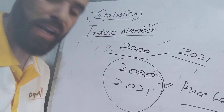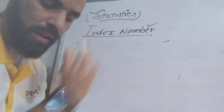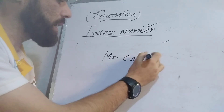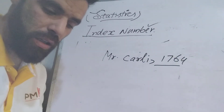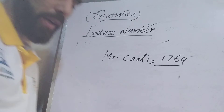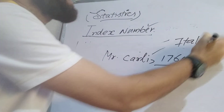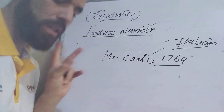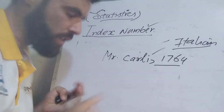Let us look at when the first index number was constructed. The first index number was constructed by Mr. Carli — spelled C-A-R-L-I — in 1764. He was an Italian scholar who constructed the first index number.